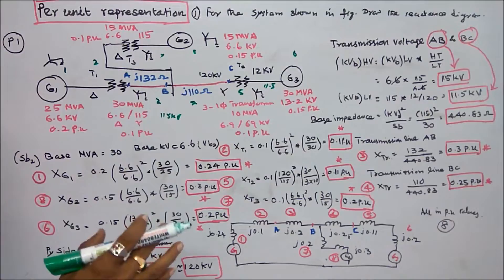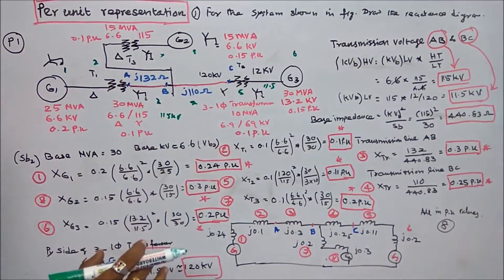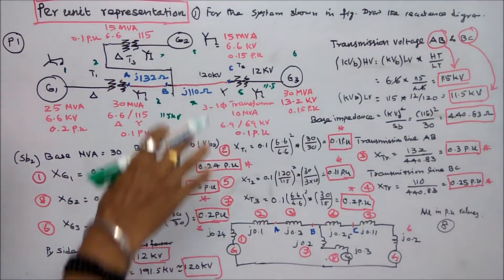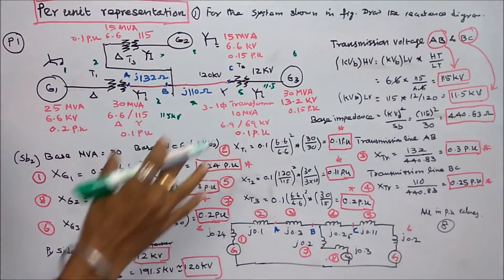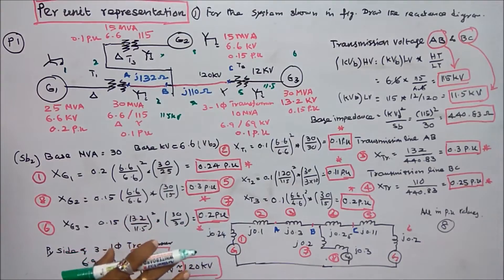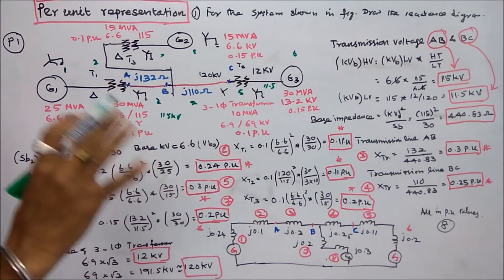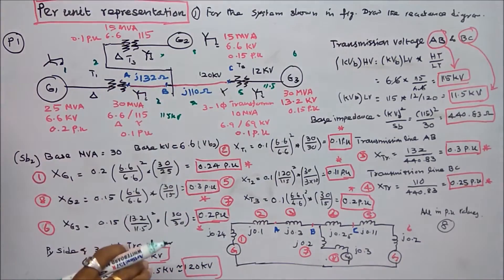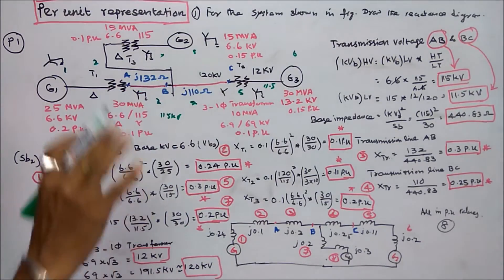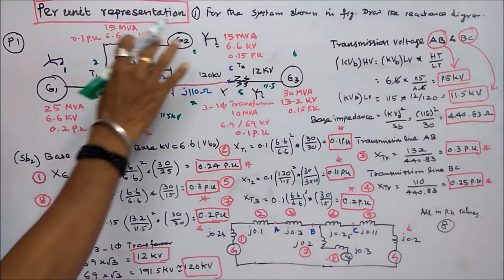This class we work out two problems in per unit representation. For the system shown in the figure, draw the reactance diagram. The system consists of eight components: three generators G1, G2, G3.